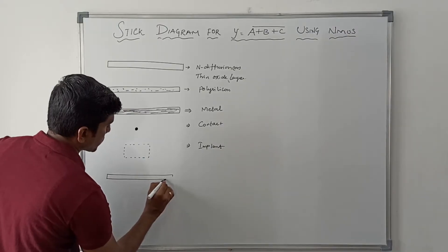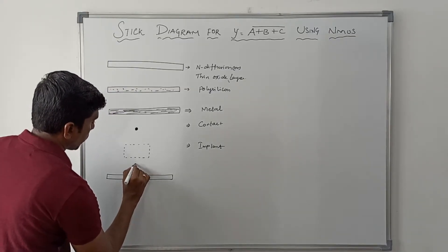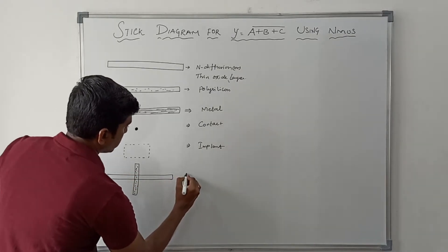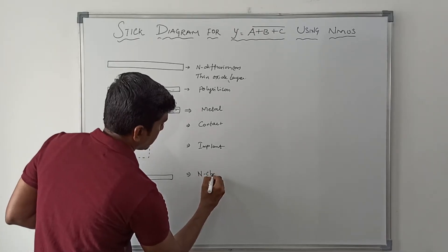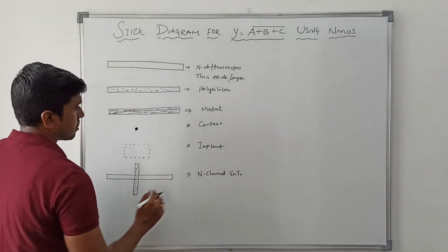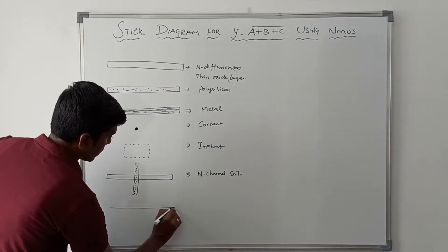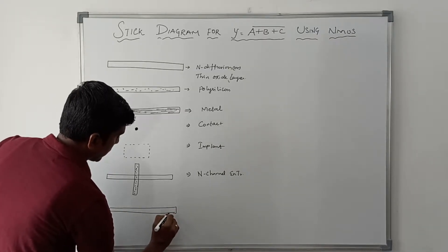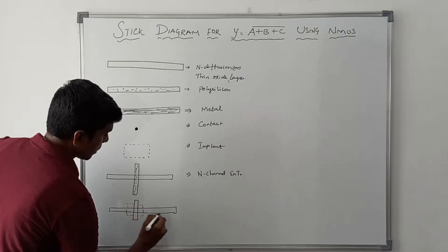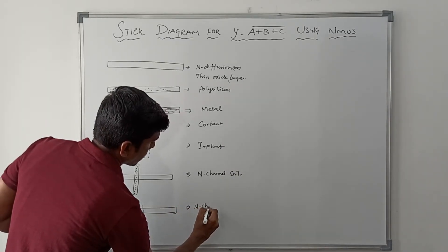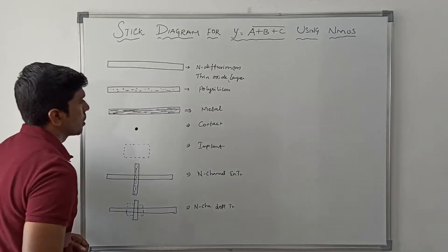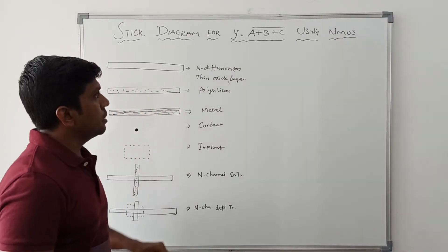When N diffusion and polysilicon overlap, that portion is called an N channel enhancement mode transistor. When N diffusion and polysilicon overlap with an implant region present, it is called an N channel depletion mode transistor. These are the graphical representations used in the stick diagram.